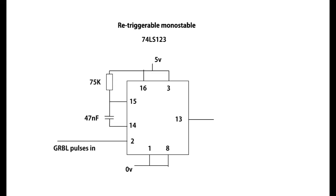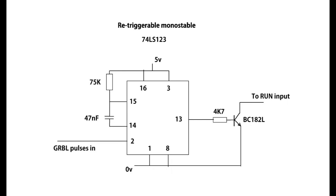First, let's look at the run signal. We can do this with what is called a retriggerable monostable. Basically this generates a pulse which, if it's longer than the input stream, will be solid as long as you get a pulse stream coming in. The circuit is fairly straightforward — the pulses come in and the output remains solid. To convert this into a pull-to-ground we stick a transistor on the end; here I'm using a BC182L, but almost anything will do.